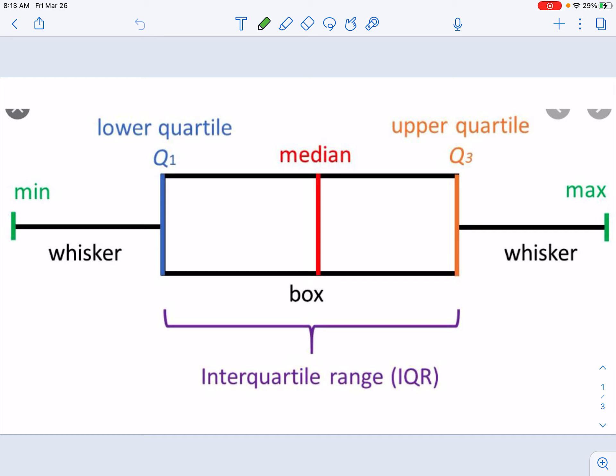Yesterday we learned about box plots, that they show five different values of our data. We have the minimum value, which is also called the lower extreme. That's the smallest number in our data set. Then we have the lower quartile, which is also quartile 1 or Q1.